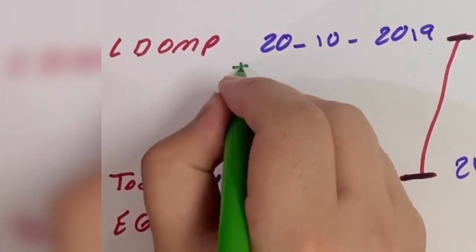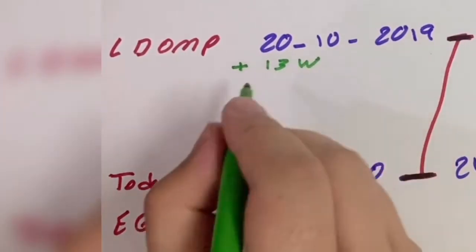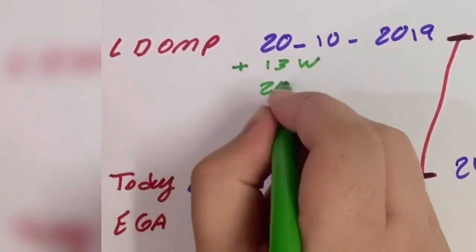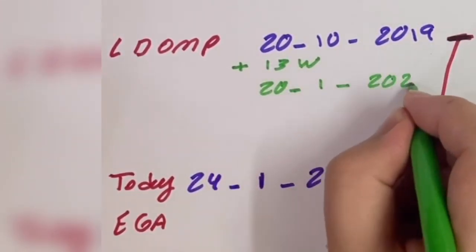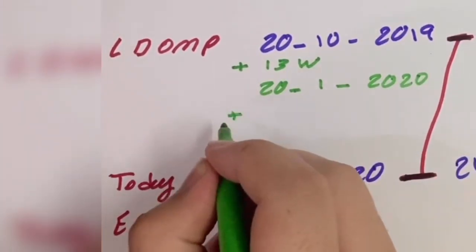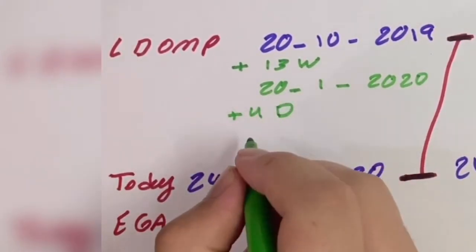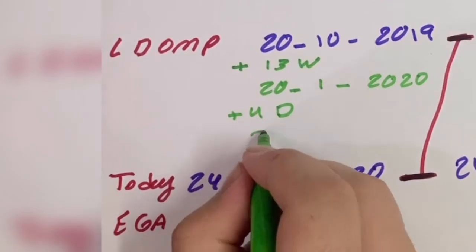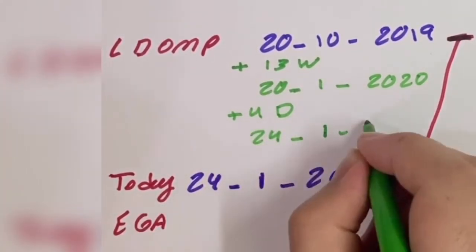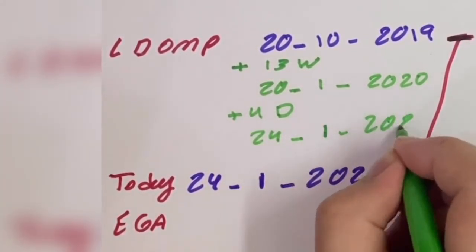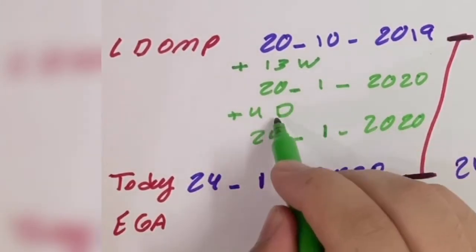So we will add thirteen weeks, making the date day 20, month 1, year 2020. We then add four days, giving us the 24th of month 1, year 2020 — which is today's date. So the estimated gestational age is thirteen weeks and four days.